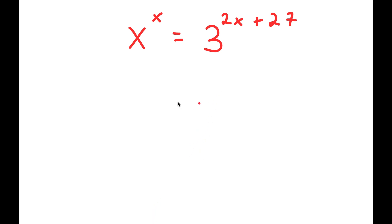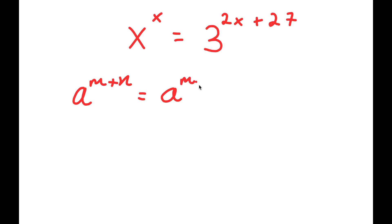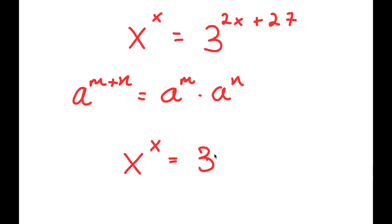In this problem, I have x to the power of x is equal to 3 to the power of 2x plus 27. To solve this, if I have something in the form a to the power of m plus n, this is equal to a to the power of m times a to the power of n. So 3 to the power of 2x plus 27 equals 3 to the power of 2x times 3 to the power of 27.